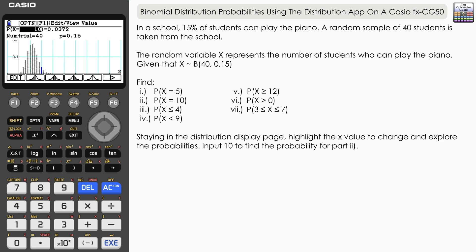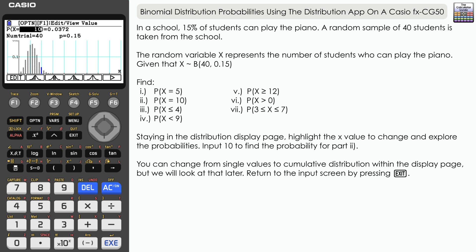Now we can actually alter the type of probability that we're looking for from individual values to cumulative values within the distribution display, but I'm going to show you that a bit later. I'm just going to go back to the main input screen.